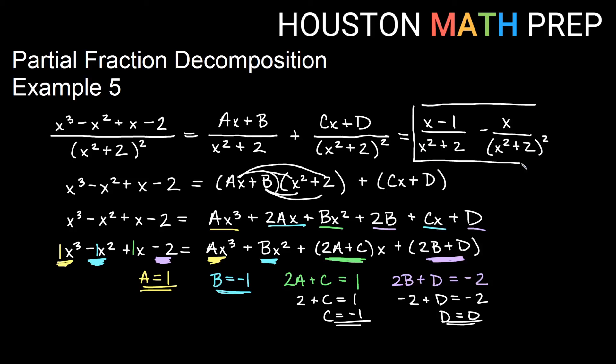So a little bit different in that we couldn't even get a single factor from our first method of setting factors equal to 0. But when we distributed and compared coefficients on both sides, it turns out some of them solved very, very quickly. So that was nice.